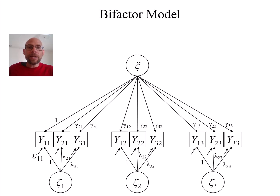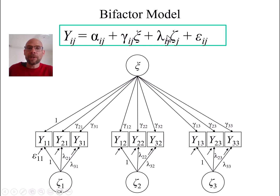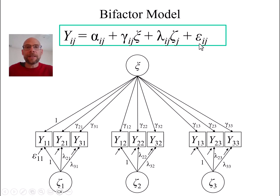In summary, a bifactor model can be described by a measurement equation where each observed variable has two loadings: one loading on a general factor and one loading on a specific factor. The gamma loadings are the general factor loadings and the lambda loadings are the specific factor loadings. In addition, there can be an intercept and a measurement error variable characterizing random measurement error.